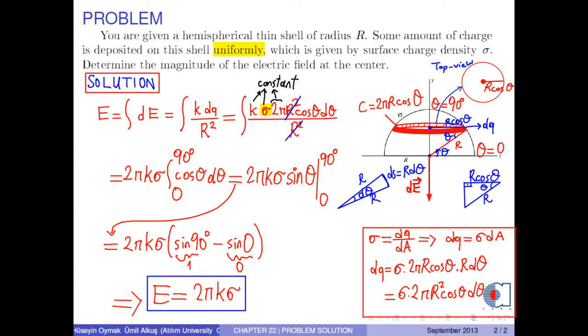As you see, it is independent of the radius of the hemisphere. This means that whatever the radius of the hemisphere, the electric field at the center is the same.